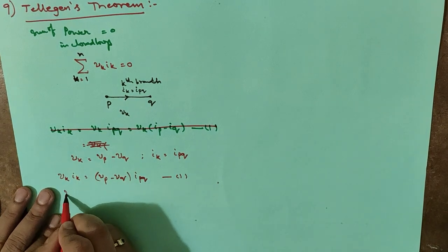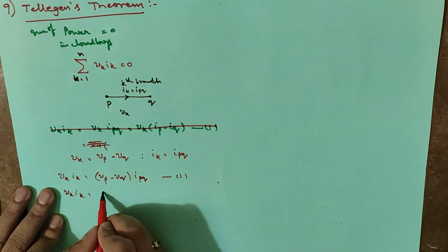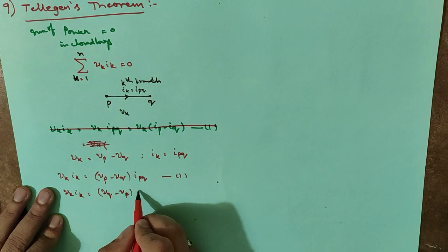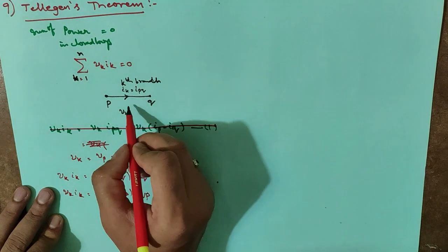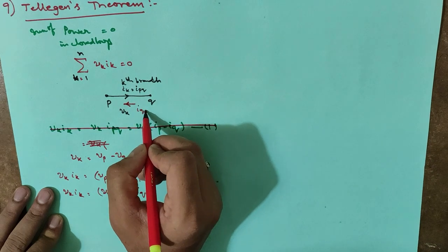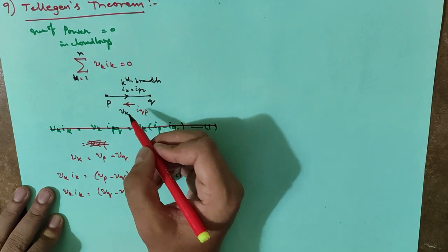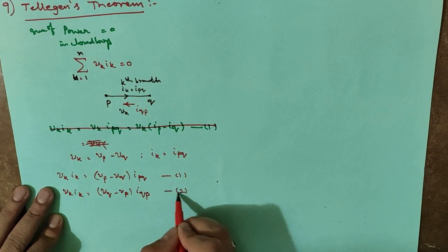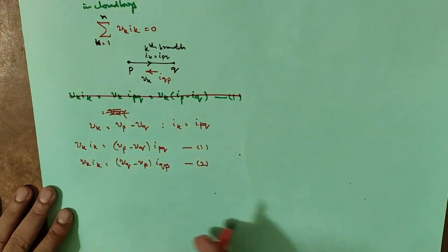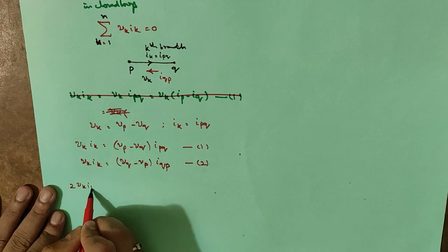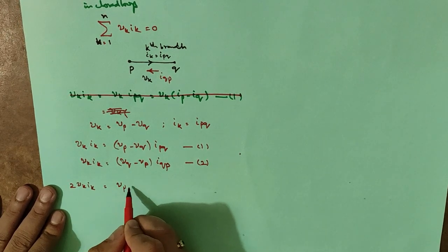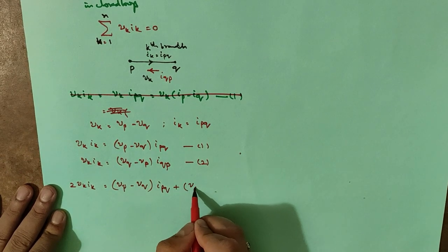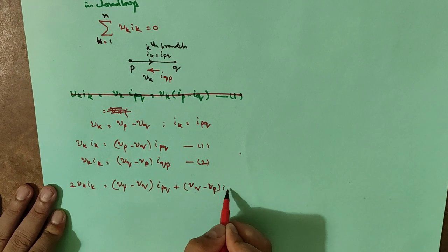The second equation: Vk·Ik can also be written in reverse order as Vq minus Vp into Iqp, where Iqp is the current passing in the opposite direction. The two negatives cancel, giving a plus, so this is also correct.